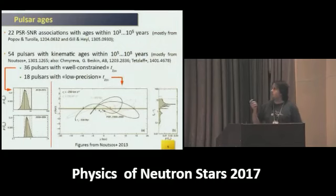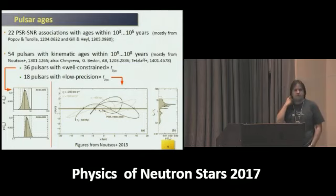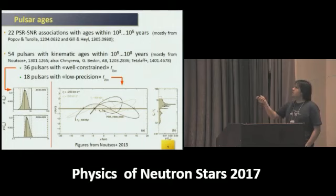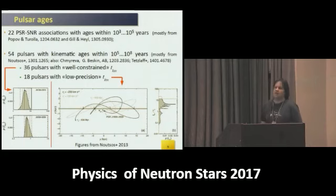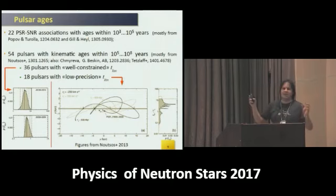Another component is pulsar ages. We compiled a list of 76 pulsars with independently known ages. For the youngest, we adopted ages of supernova remnants associated with these pulsars. Another 54 pulsars have kinematic ages. Kinematic age is the time a pulsar needed to achieve its current galactic position when traveling from the galactic disk. Pulsars are believed to be born within the galactic disk, obtain a huge kick, and escape away.